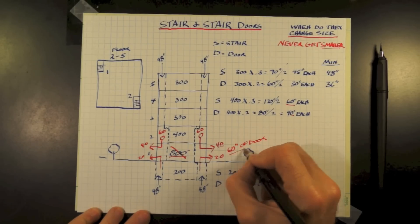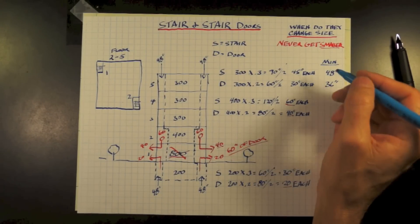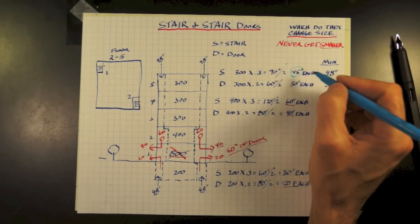So therefore, at this level, at these locations, we will need a minimum of 60 inches of door width in order to comply with the code.